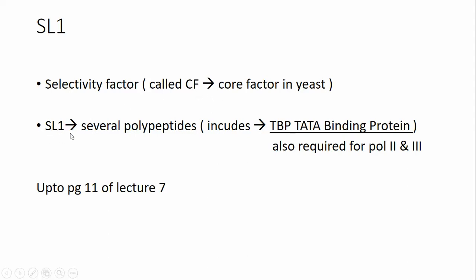SL1 is made up of several polypeptides, which includes TBP, or TATA-binding protein. TBP is required not only for RNA Pol I but also for RNA Pol II and III. This covers the content up to page number 11 of lecture 7.